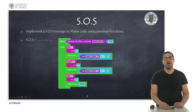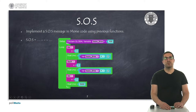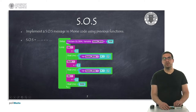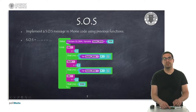In this first example, I'm going to show you how to implement an SOS message in Morse code, so this corresponds to three dots, three dashes, and three dots again. I'm going to release the button because I have already uploaded the code onto the board to see how it works.